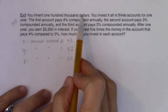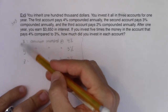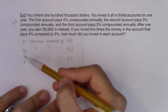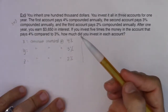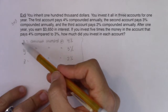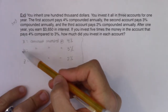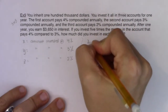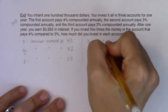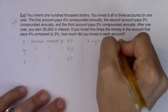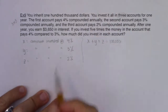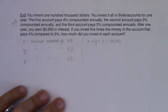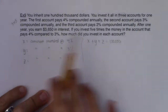I inherited $100,000, so whatever I split across the three accounts must add up to that. Maybe I put $50,000 here, $30,000 there, $20,000 in the last — I don't know the exact split yet. But I do know that x plus y plus z must equal $100,000. That's my first equation.